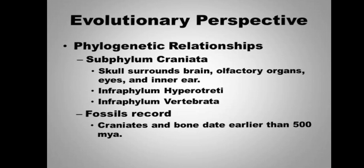The Craniata is the subphylum which is divided into two infraphyla: Hyperotreti and Vertebrata. The main difference between Hyperotreti and Vertebrata is that Hyperotreti may not have a properly developed vertebral column, but Vertebrata have vertebrae.